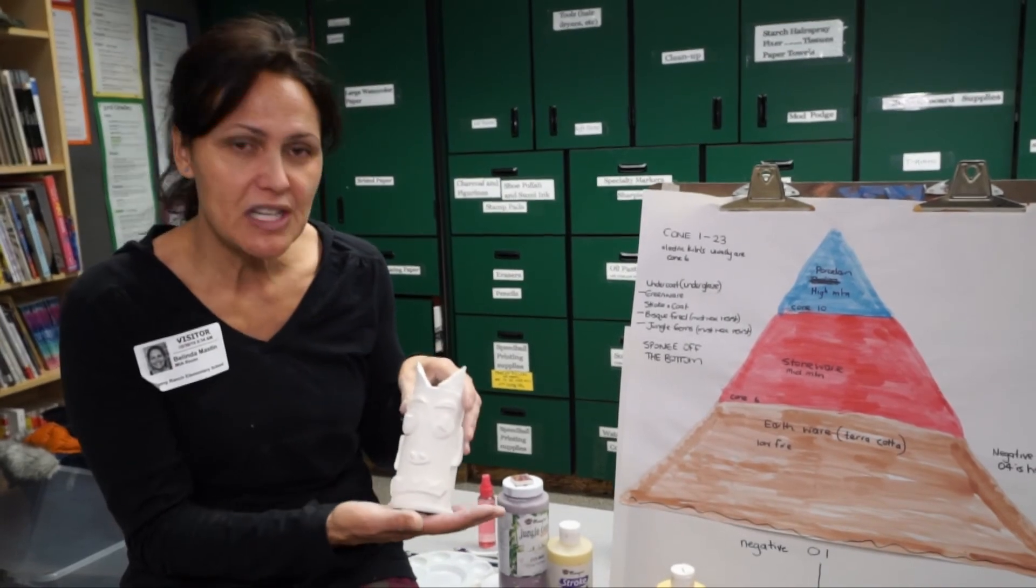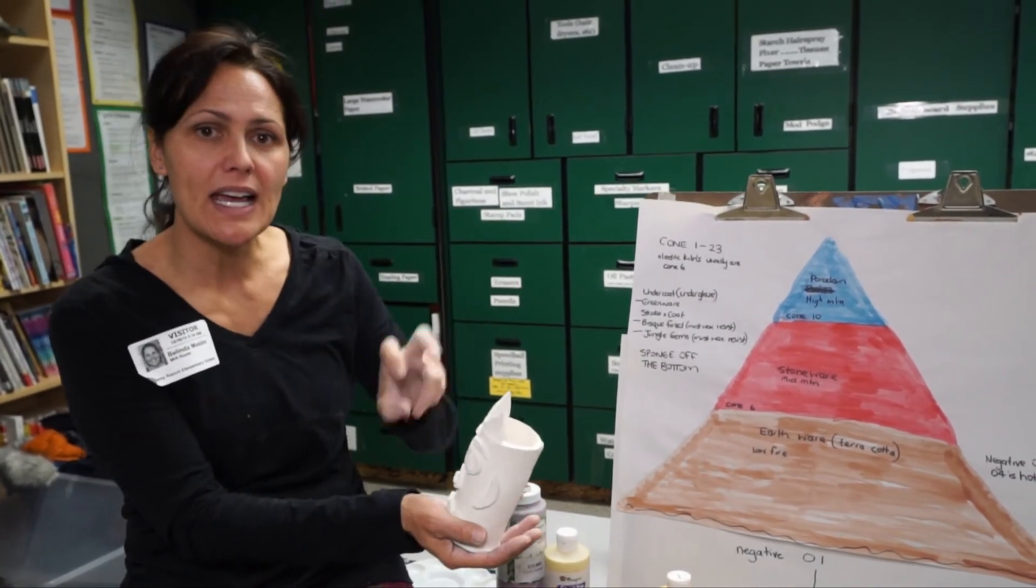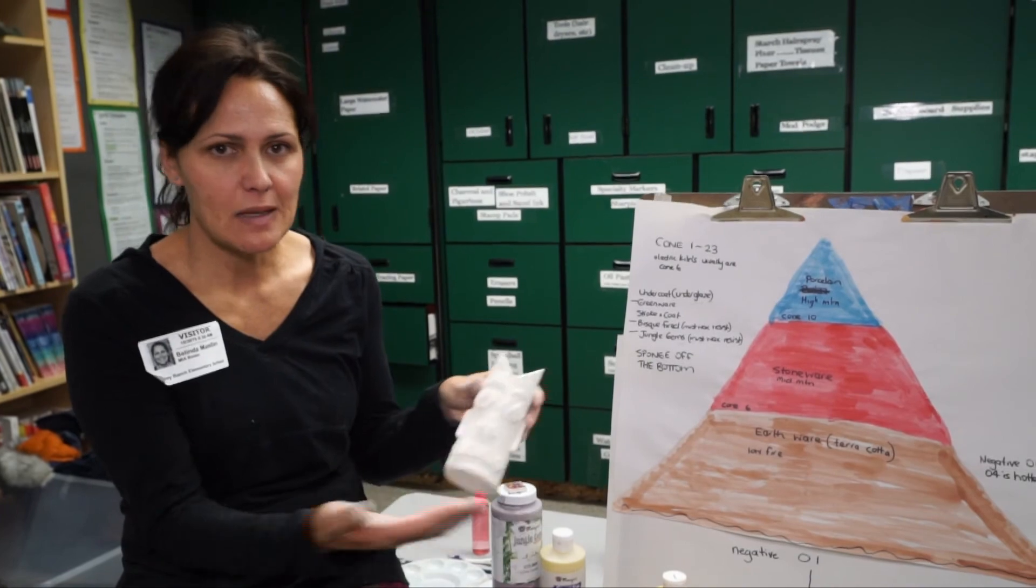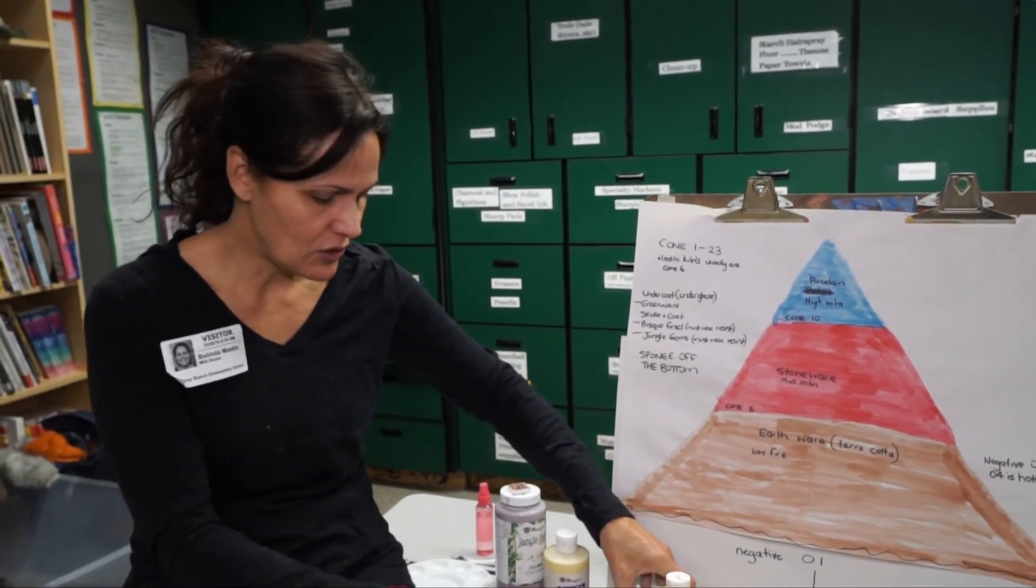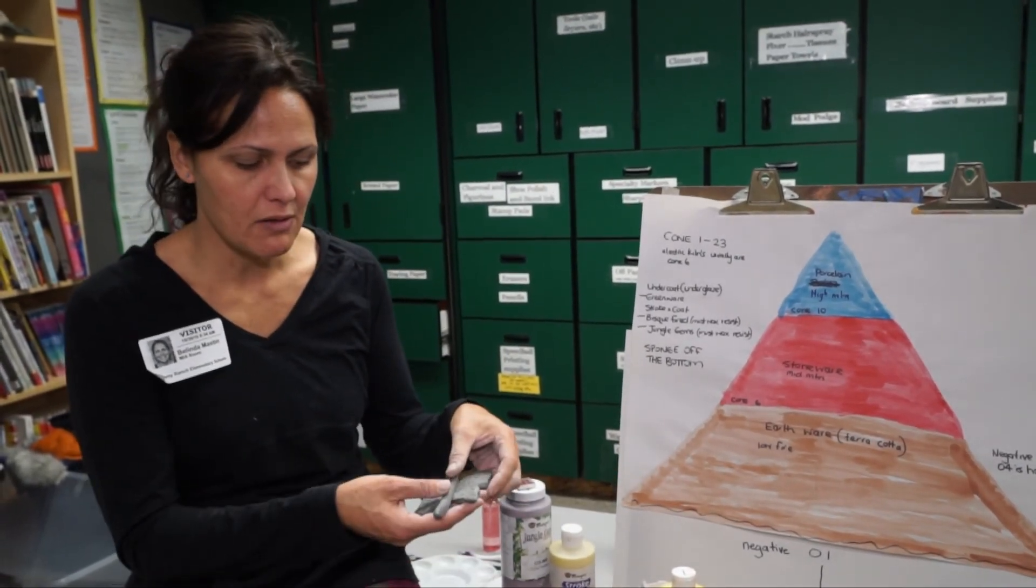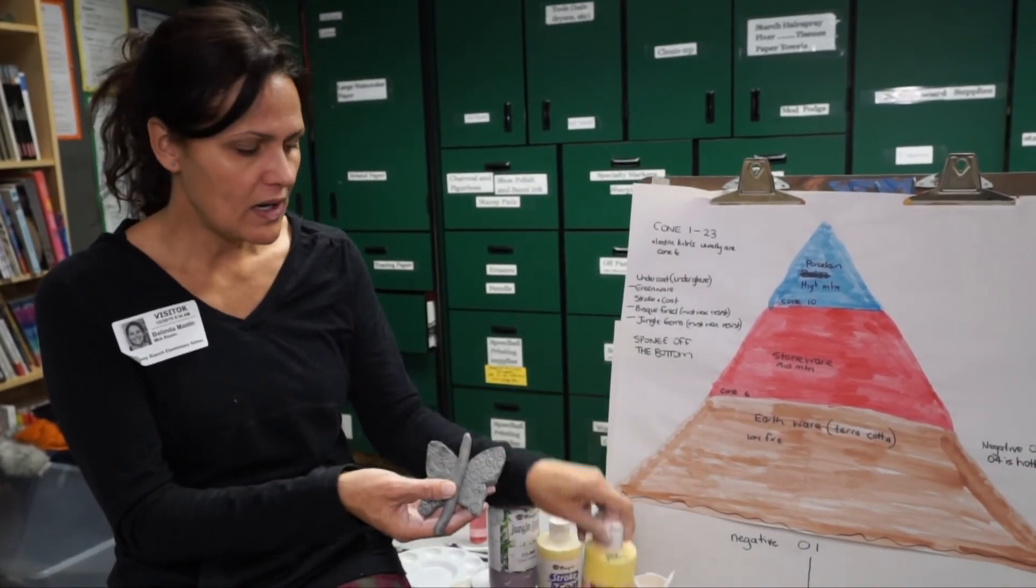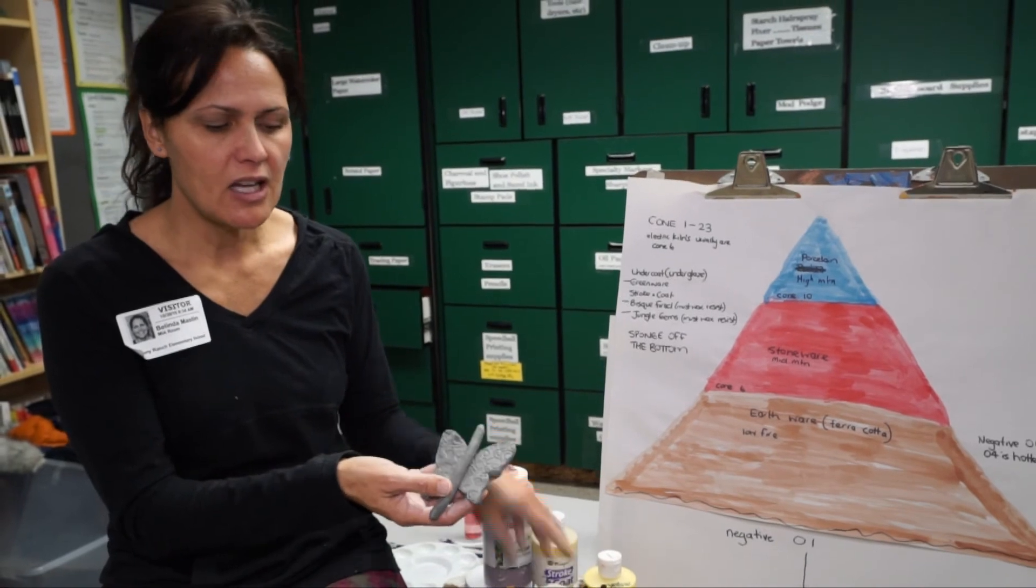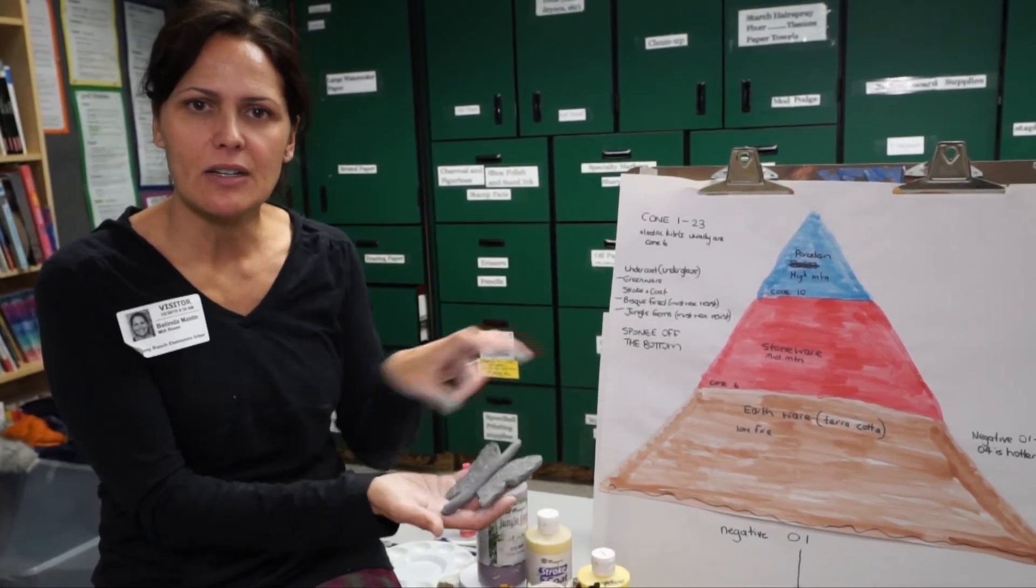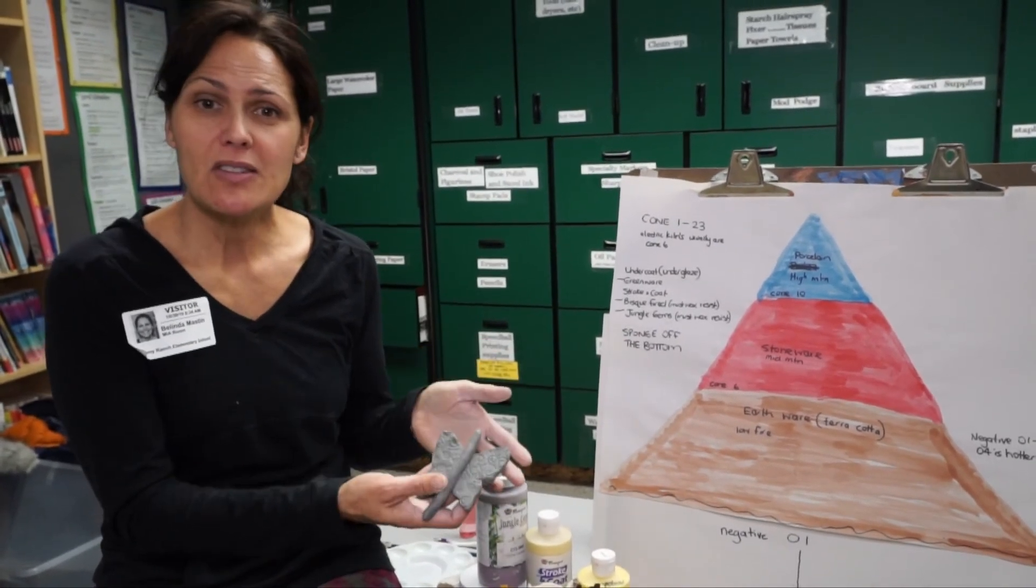Another option is we can lacquer it and spray it and you're done. It's up to you what you decide to do. But most of the time we find with the kindergarten classes we use the undercoat, or we get it bisque fired and then we can acrylic paint it and then lacquer it with a spray.